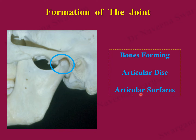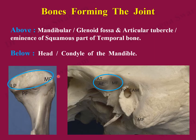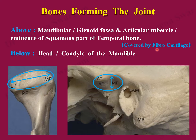Formation of the joint can be studied under: bones forming the joint, articular disc, and articular surfaces. The bones forming the joint are the squamous part of the temporal bone from above, which shows a concave mandibular or glenoid fossa behind and a convex articular tubercle in front. From below, the bone is the head or condyle of the mandible. Unlike other synovial joints, the bones forming the temporomandibular joint are covered by fibrocartilage.